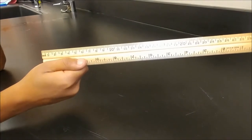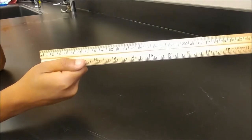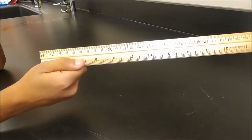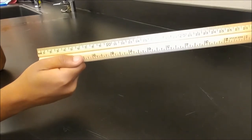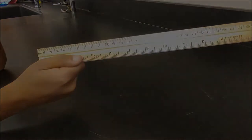Here in the US, most rulers come labeled with both a metric side and a customary unit side. Customary is what most Americans use for length measurements: inches and feet.